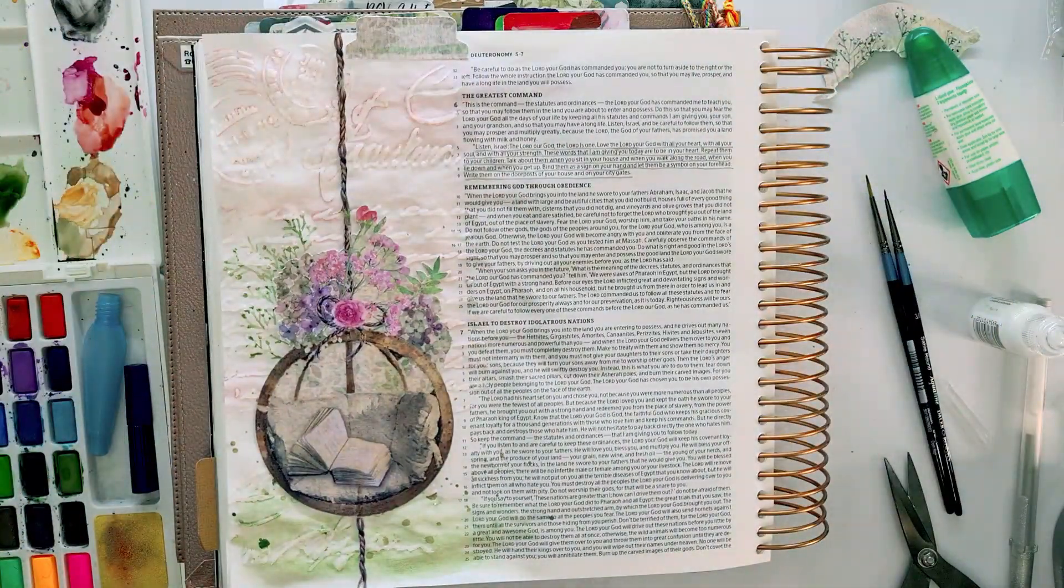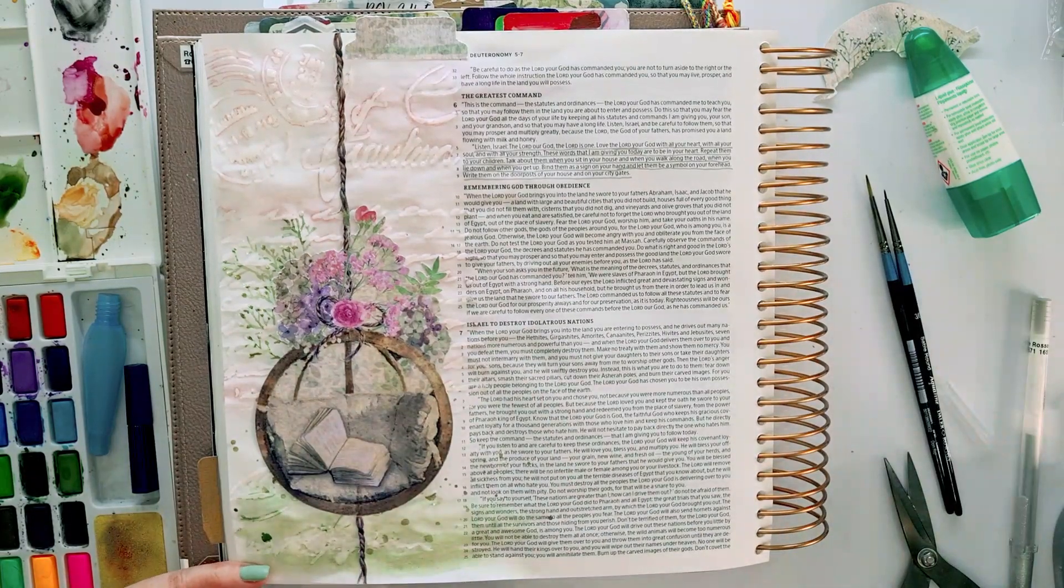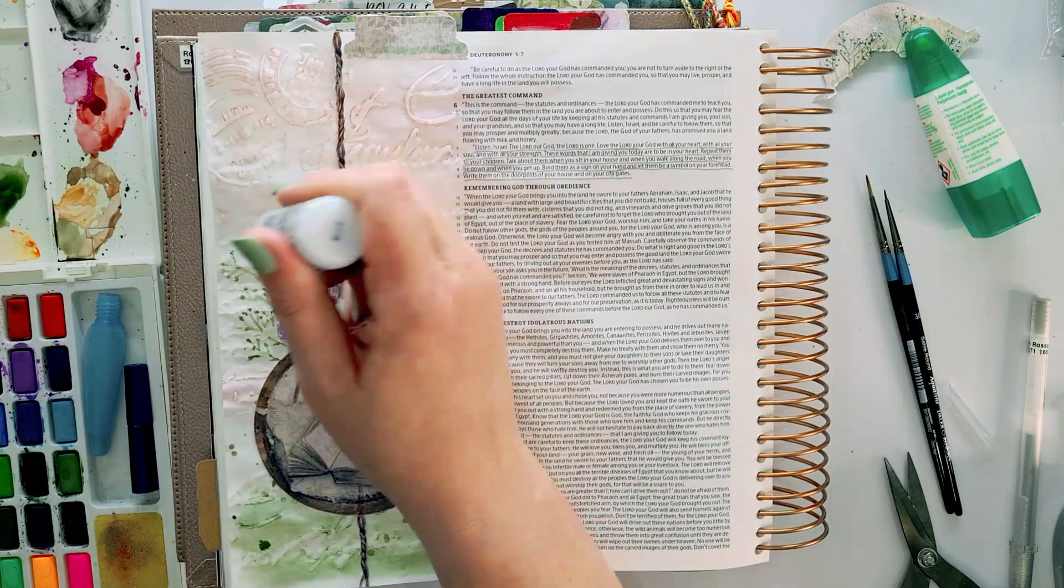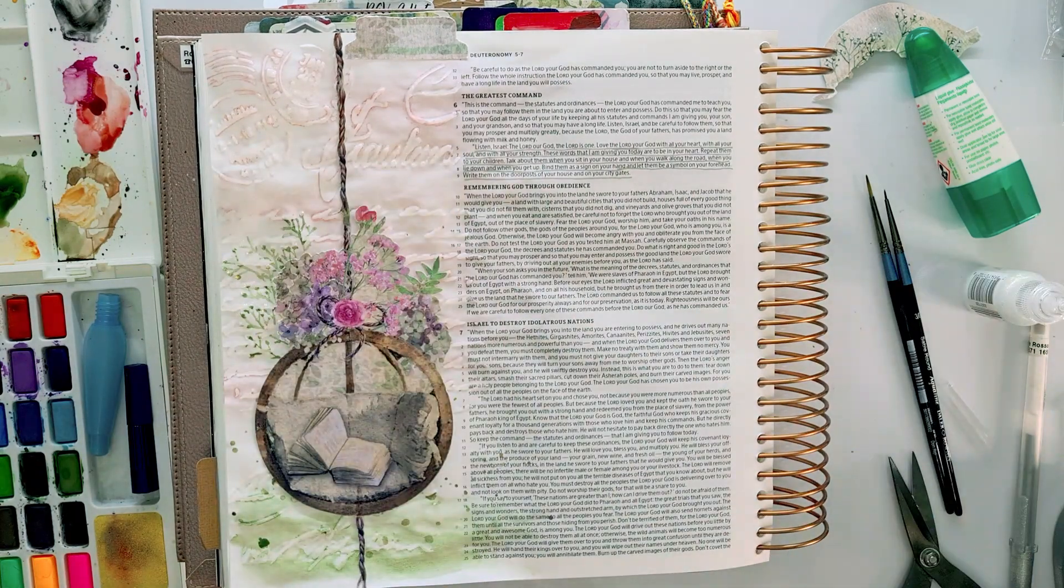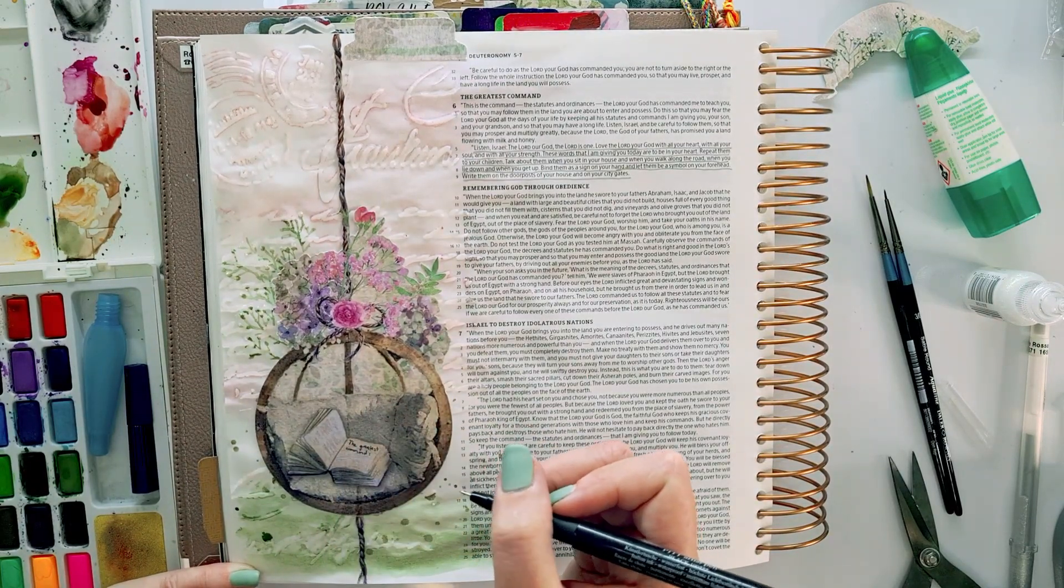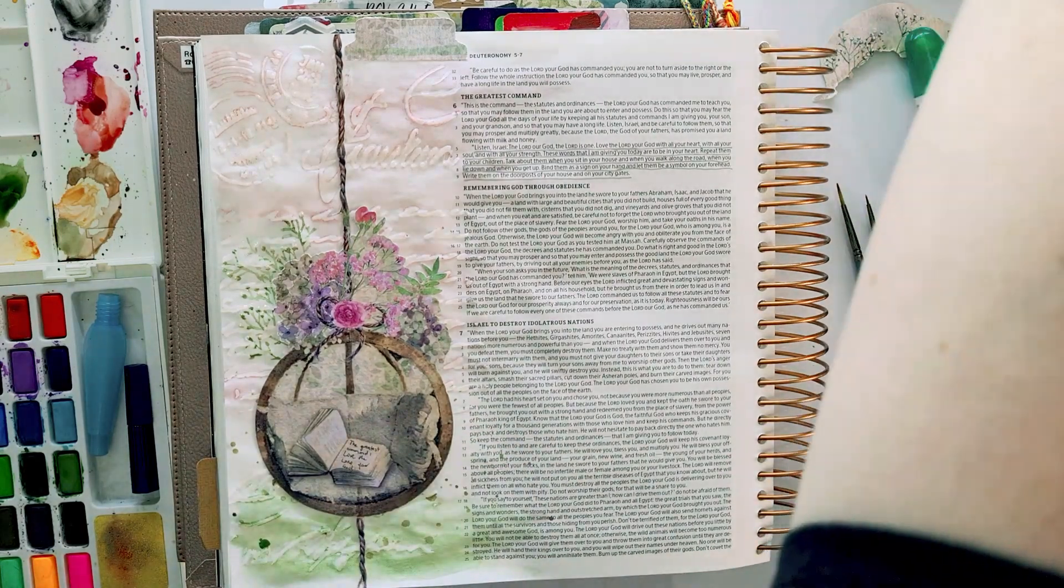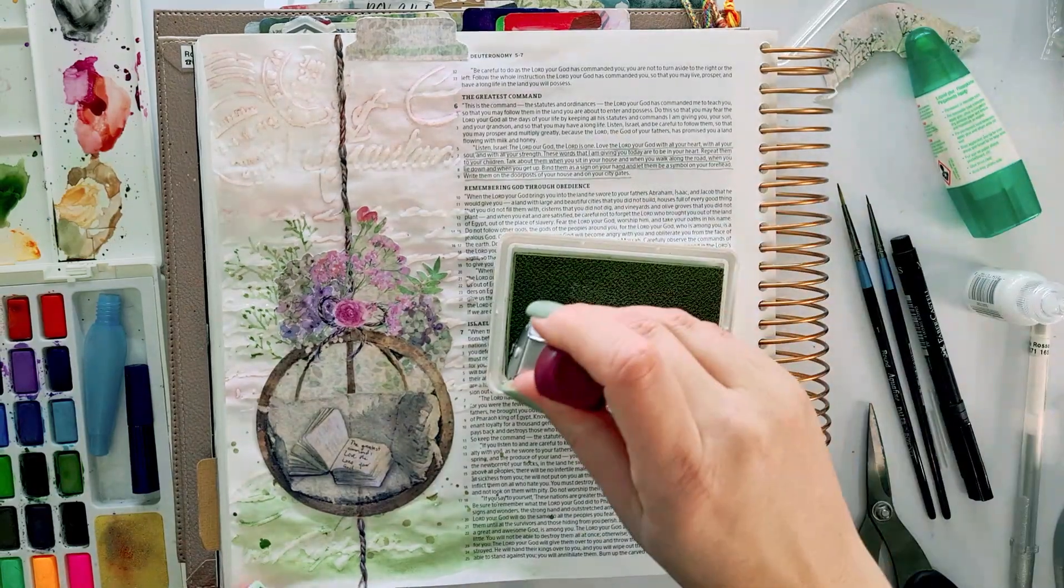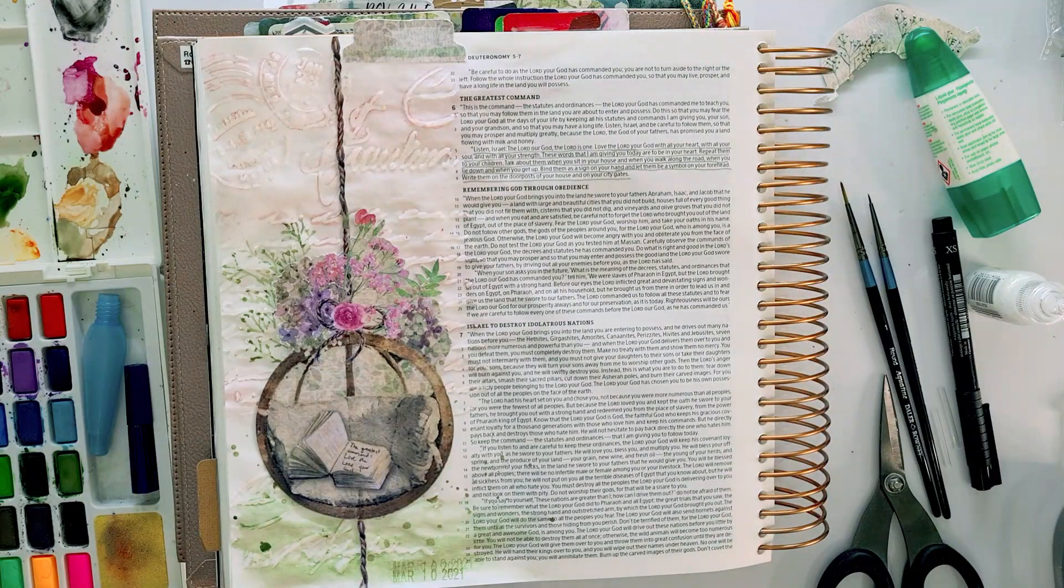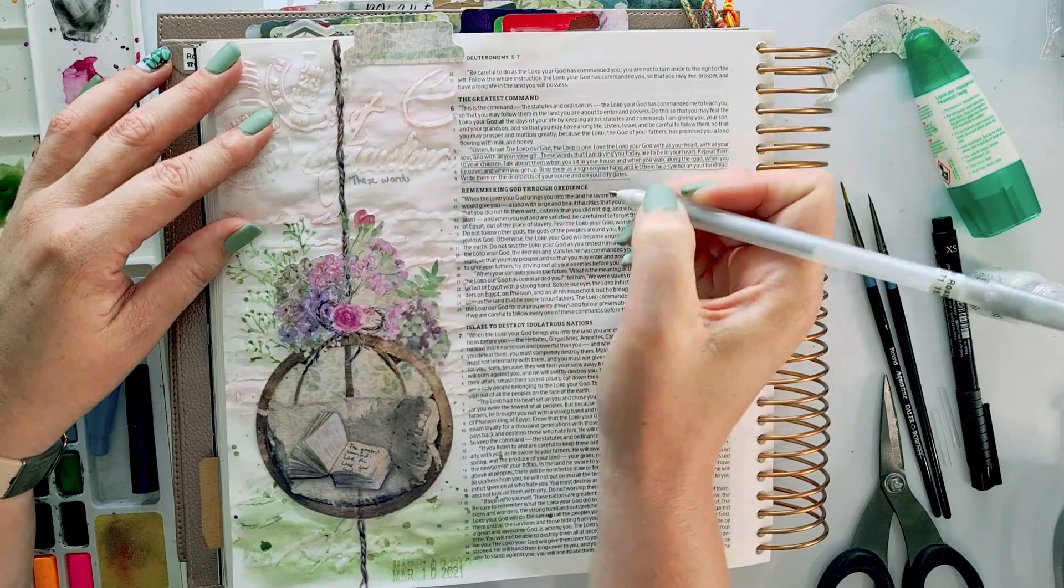Then I am using my Faber Castell S nib pen to just write in this little book that says "the greatest command: love the Lord your God." I'm writing that in a very scribbly font just so that it looks like it's a part of the writing on this page. Taking my Olive Cocktail Creative Retreat ink to just stamp the date at the bottom.